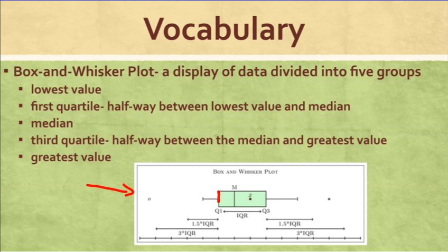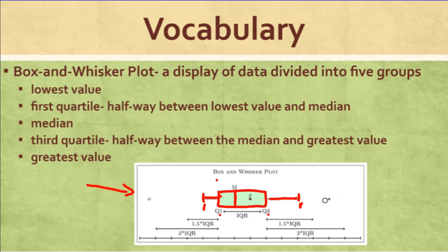What you see pictured here is our box and whisker plot. Here you have your box, the whiskers extend out from the box, and we have a line in the middle — that's our median. Quartile one is on the left edge, quartile three is on the right edge, the maximum is at the far right, and the minimum is at the far left. An asterisk represents an outlier — a number that's way too big or too small compared to all the other numbers. We'll be looking at creating box and whisker plots, identifying those five groups, and identifying if there's an outlier.